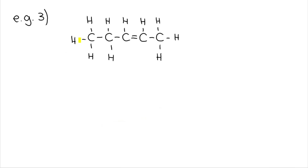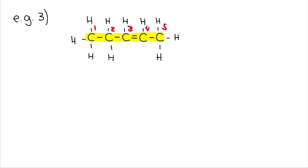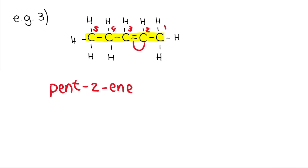In the next example, the chain has five carbons. Numbering from right to left gives the double bond after carbon two; numbering the other way puts it after carbon three. So we number right to left. Five carbons is 'pent-', the double bond comes after carbon two, so this molecule is pent-2-ene. It ends in '-ene' because it has a double bond.